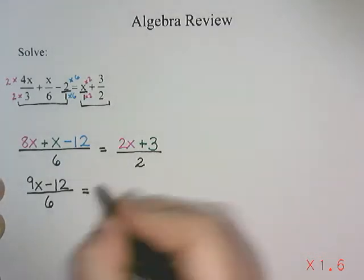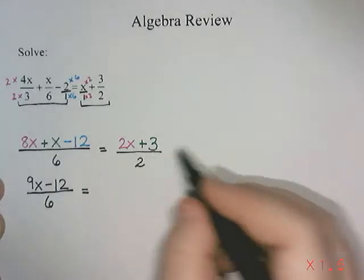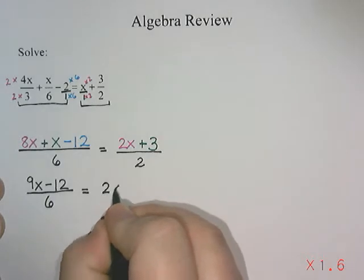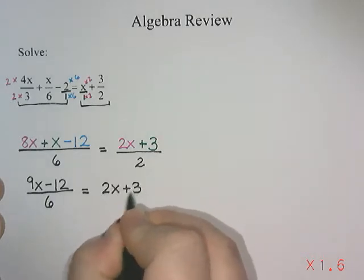And then on the other side, 2x plus 3. One has an x, one does not, so they're not like terms. So it's just going to stay 2x plus 3 over 2.